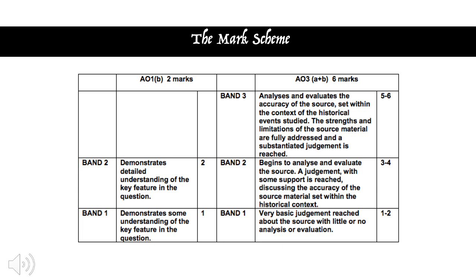We need to set the source within the context of the historical events studied. For example, if you get a source about Elizabethan Catholicism and you're talking about Puritanism because you've gotten confused and think Catholics were Puritans — which is completely wrong — then you haven't contextualised your source and you won't get into the top band. We need to show our understanding of faction and how it works at Elizabeth's court, and look at the strengths and limitations of the source material — both from our knowledge and from the author.